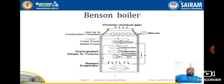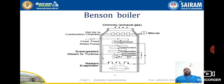The Benson boiler is a type of forced circulation boiler. Combustion takes place at the bottom of the Benson boiler, and at the top a chimney is provided to discharge the exhaust gases. A blower is also provided. There is a combustion chamber with hot air, and feed water is supplied for generating steam. An economizer, convection section, and evaporator are provided. The superheated steam obtained is used to expand and produce mechanical work, which is then converted to electrical work through turbines.